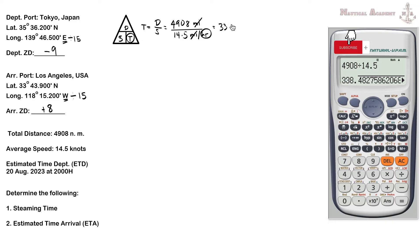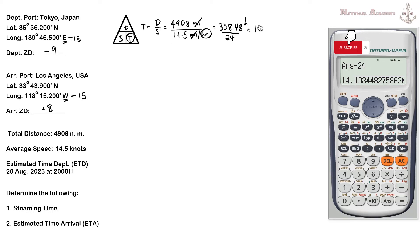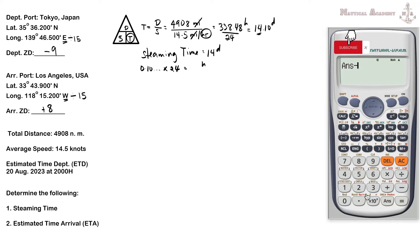We have 338.48 hours. Since there are 24 hours in one day, we divide by 24 to convert to number of days: 338.48 ÷ 24 = 14.10 days. The whole number 14 gives us 14 days. The remaining decimal, 0.10, will be multiplied by 24 to find the remaining number of hours.